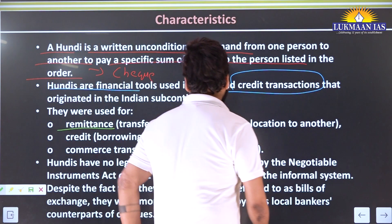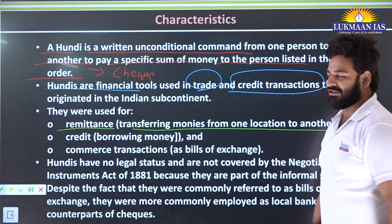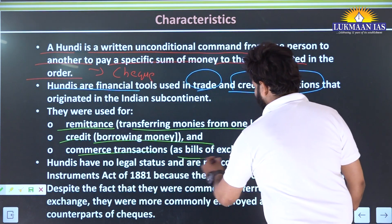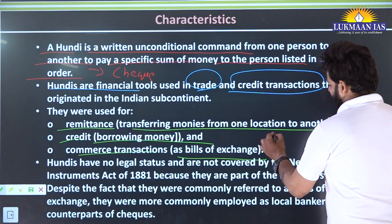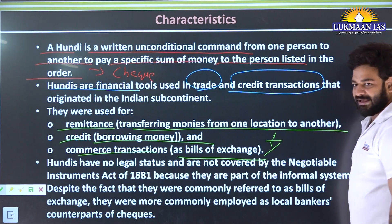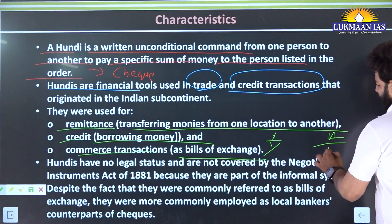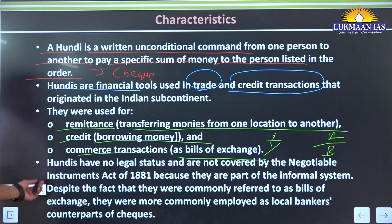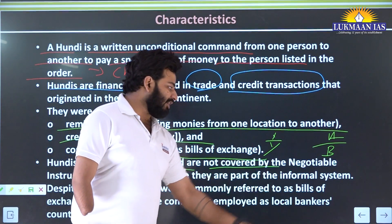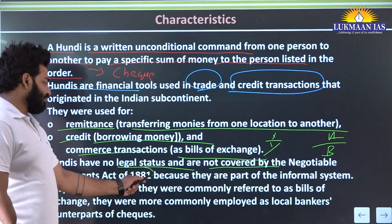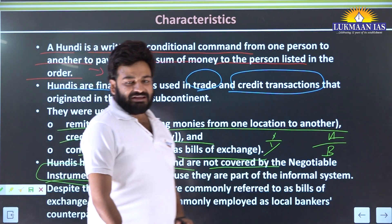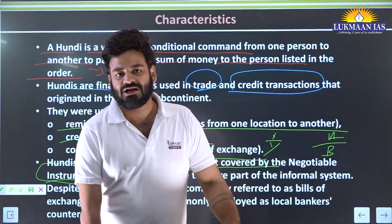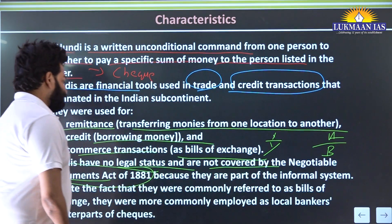Hundis were used for three purposes: first, remittances - transferring money from one location to another; second, credit - borrowings; and third, commercial transactions as bills of exchange, guaranteeing that a product was received at one location and payment should be made at another. Importantly, Hundis have no legal status and are not covered by the Negotiable Instruments Act of 1881 - they are an informal agreement between two parties.